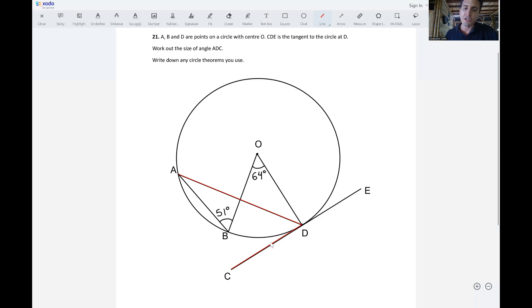Now the first circle theorem that comes to mind is that the radius and tangent meet at a 90 degree angle. So we already know that angle ODE is 90 degrees. You could put a little square there or just say 90 degrees. I'm just emphasizing that ODE is equal to 90 degrees.